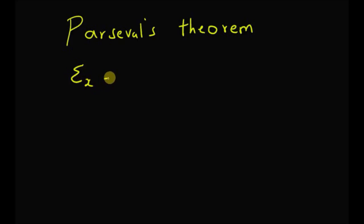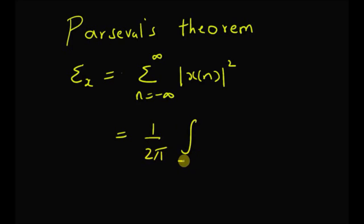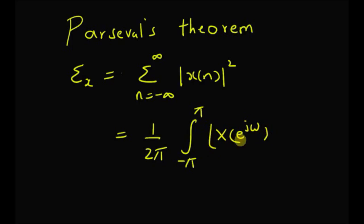The energy Ex is equal to the sum from n equal to minus infinity to plus infinity of the absolute value of the signal squared. In the frequency domain it can be represented as 1 by 2 pi, integral from minus pi to plus pi of x of e to the power j omega, absolute value squared, d omega.